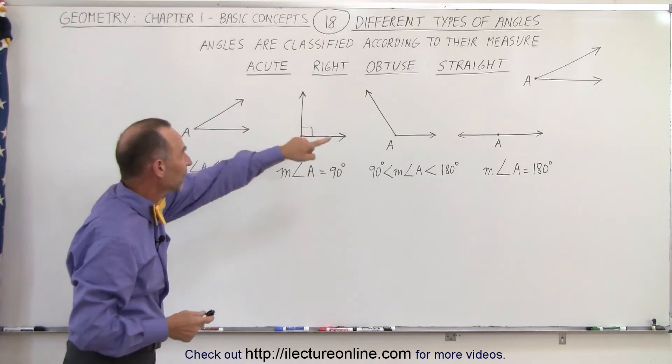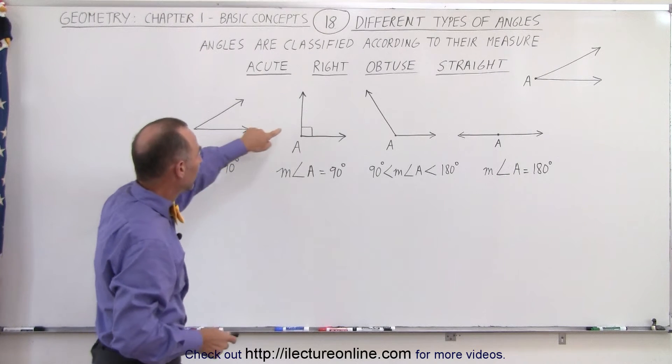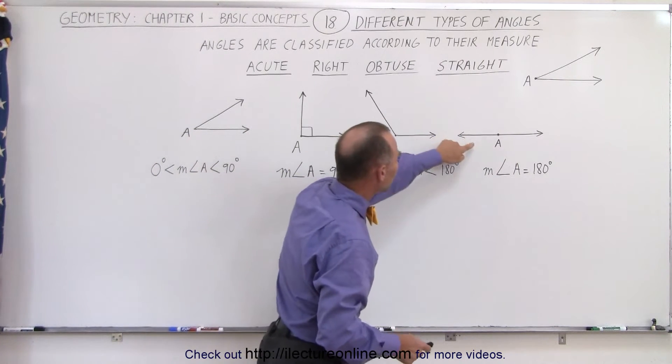So here we have the four different angles. This is an acute angle, a right angle, an obtuse angle, and a straight angle.